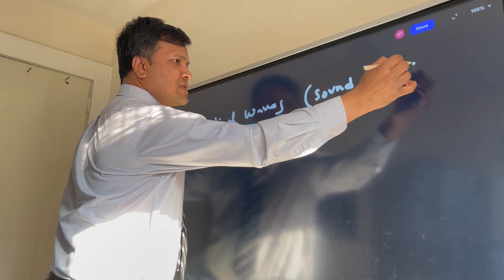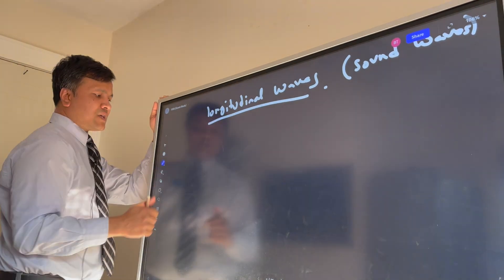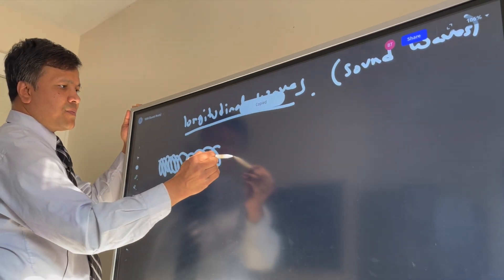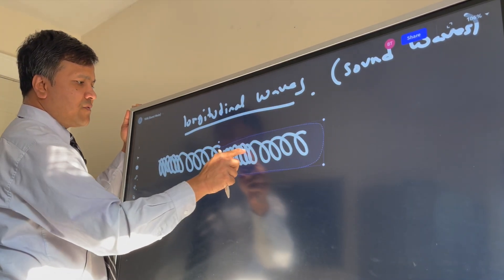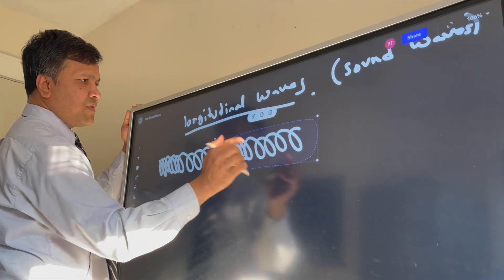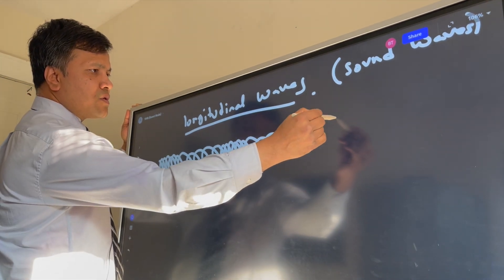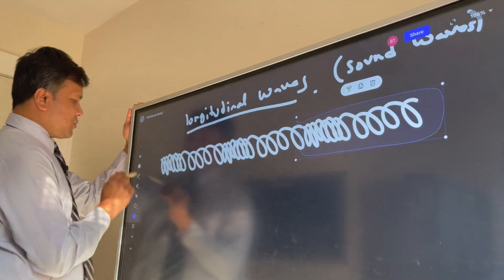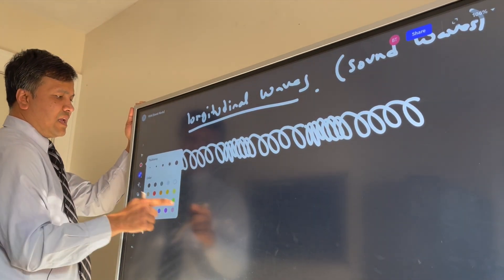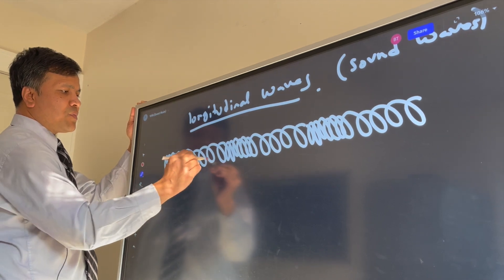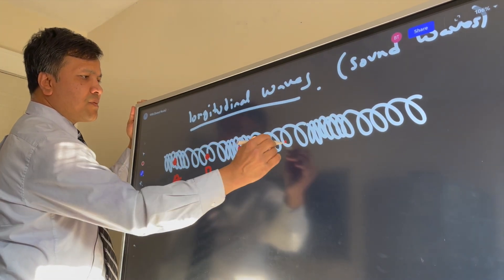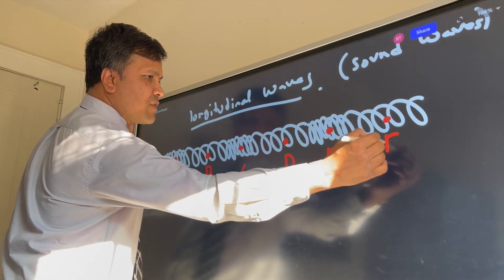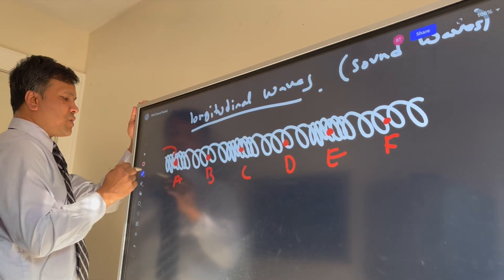Our case study will be the sound wave, so let's understand the longitudinal wave. I'll copy and paste this a few times to create a diagram. Let me put some points using different colors — put A over here, B over here, C over here, D over here, E over here, F over here. Call this one compression.